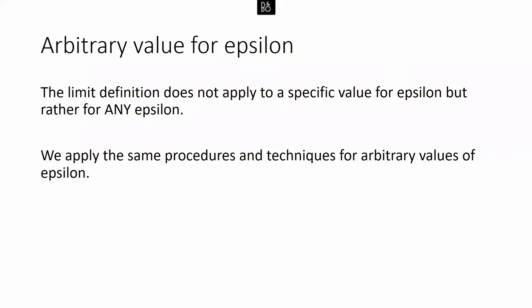The last thing we want to do to cap out the idea of definitions of limits is look at the limit definition again and use it with an arbitrary value of epsilon. So instead of specifying that epsilon was 0.1 or 0.01, we're going to look for an arbitrary value of epsilon — we just leave epsilon as a variable.